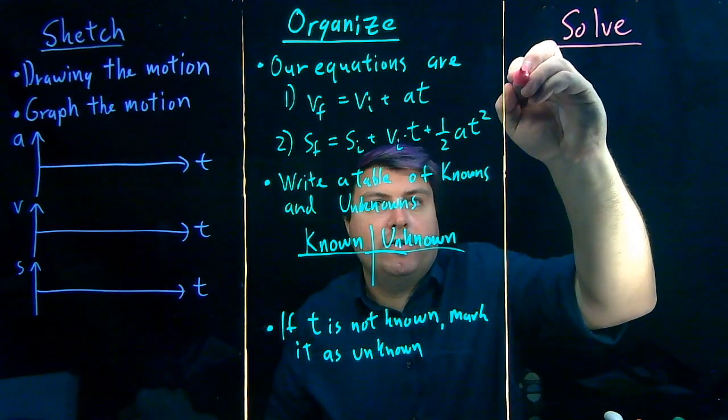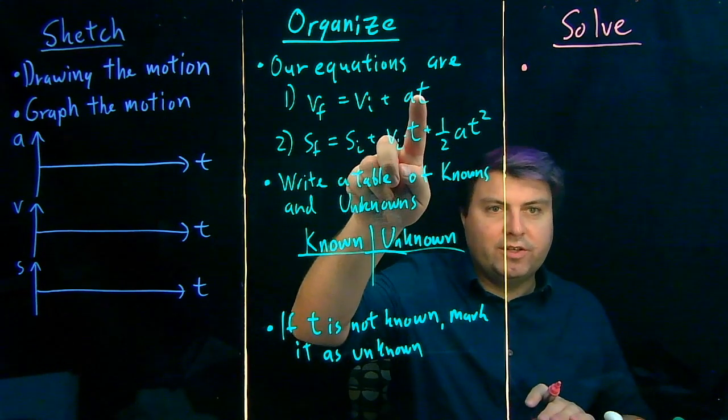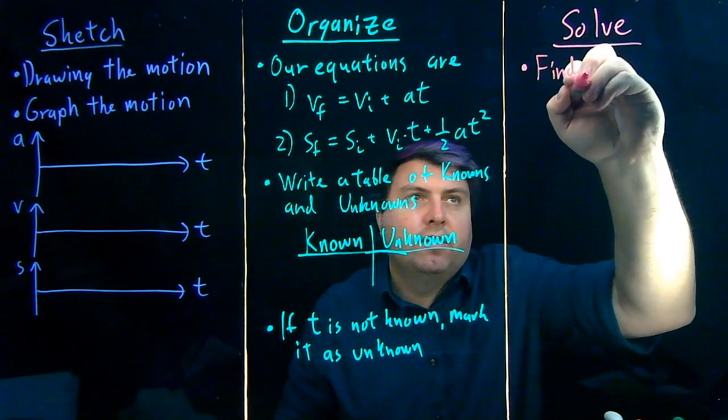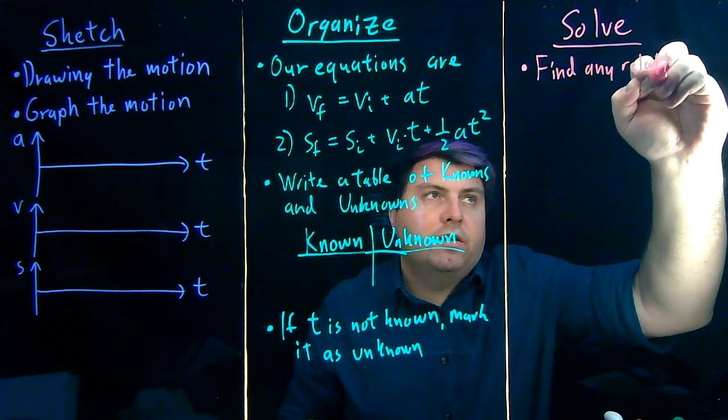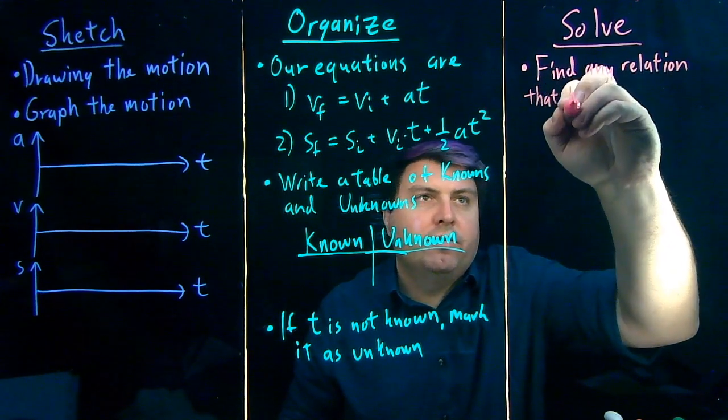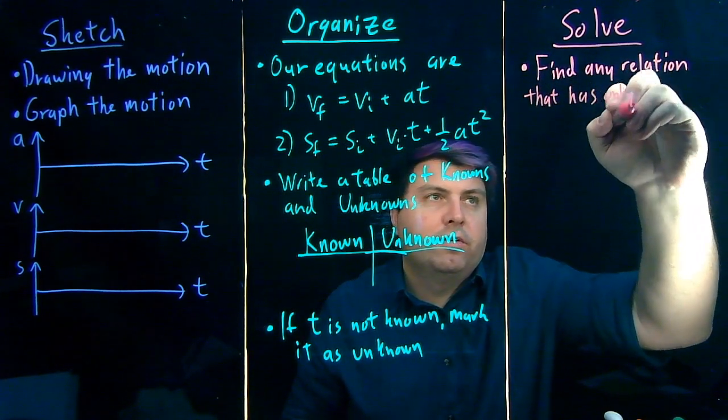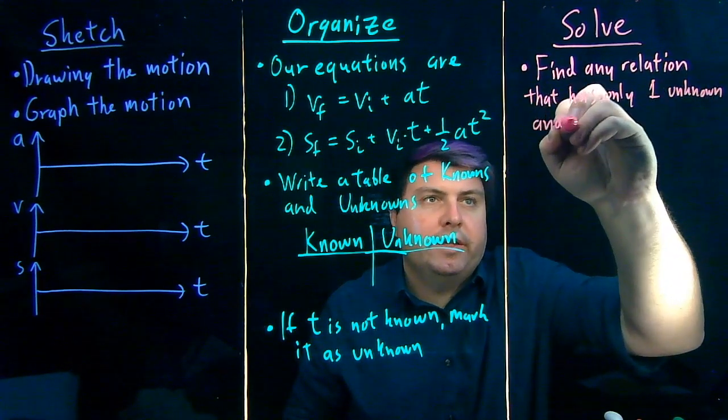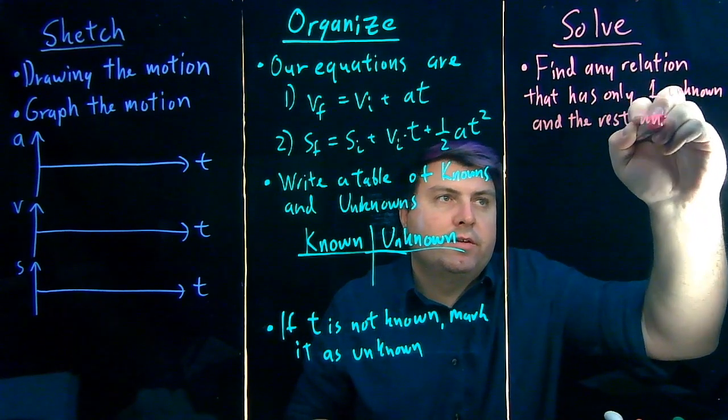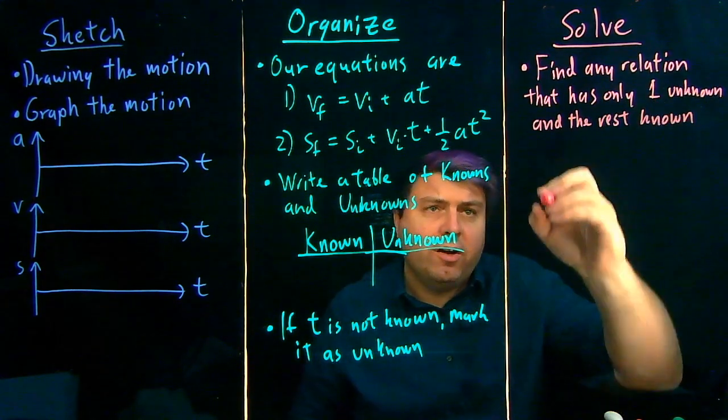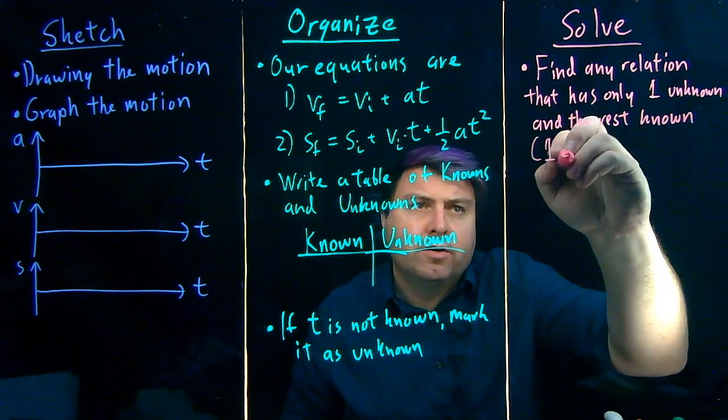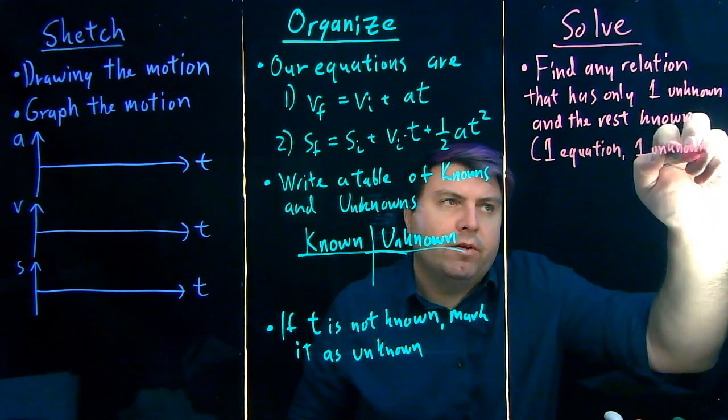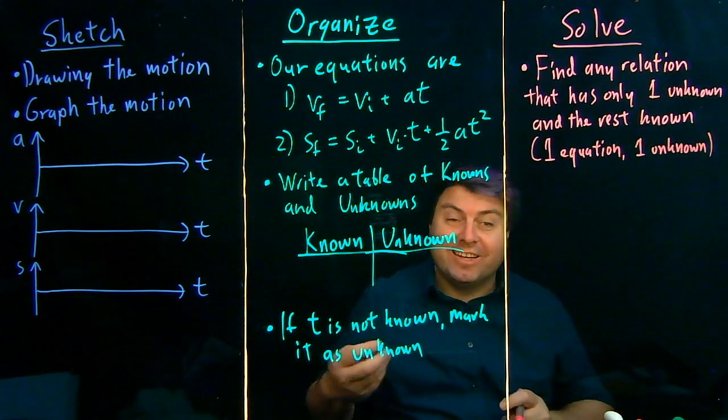As we want to solve, what we want to do is look at our equations, look at our knowns and unknowns, and try to find any relation that has only one unknown and the rest knowns. So we are going to call this one equation, one unknown, and we'll shorten this as we get into more problems.